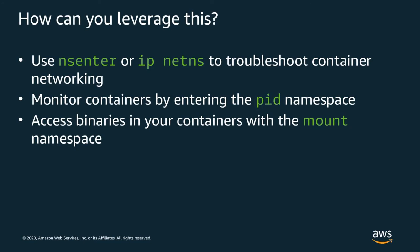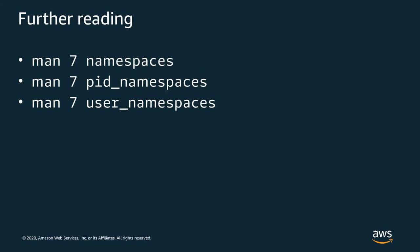We just saw how to use the nsenter and ip-netns tools to enter namespaces and examine the resources that are visible. You can use these tools to help troubleshoot when things aren't quite working the way you expect, and monitor to see what your containers are up to. More information on namespaces is available in Section 7 of the Linux Programmer's Manual, which is included in most Linux distributions by default.